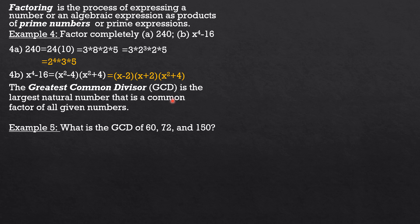The greatest common divisor, or GCD, is the largest natural number that is a common factor of all given numbers. The technique, especially for large numbers, is to factor completely each number. The GCD is the product of the least common factors — that is, the common factors present in all numbers, taken with the lowest power.